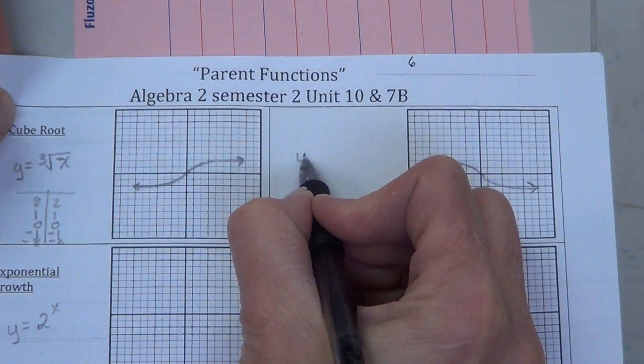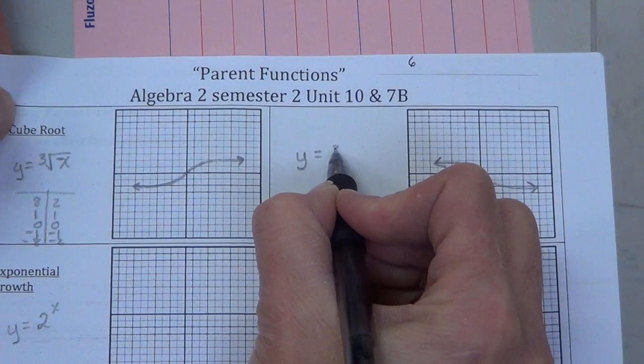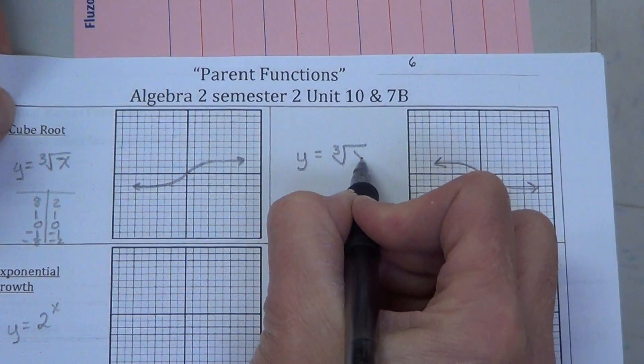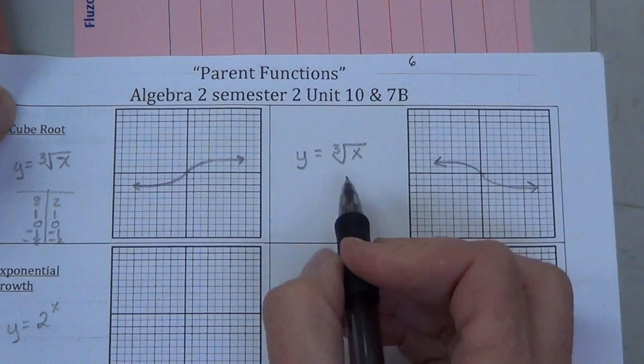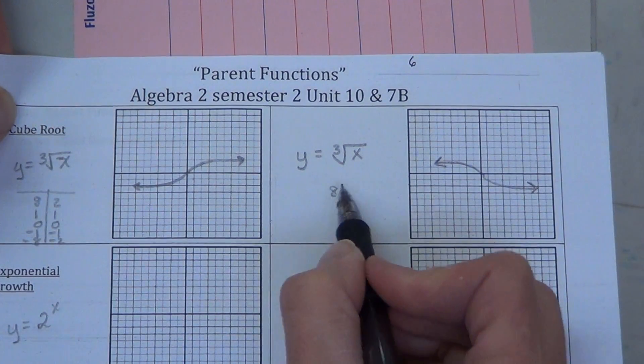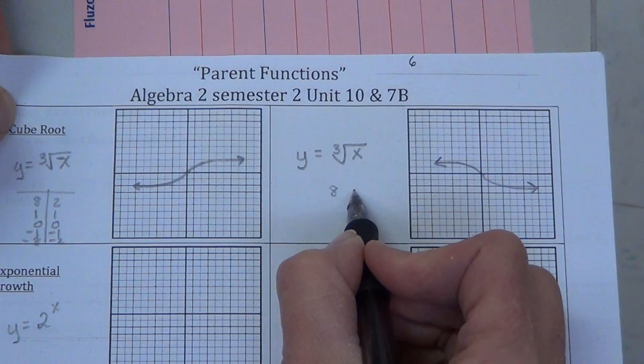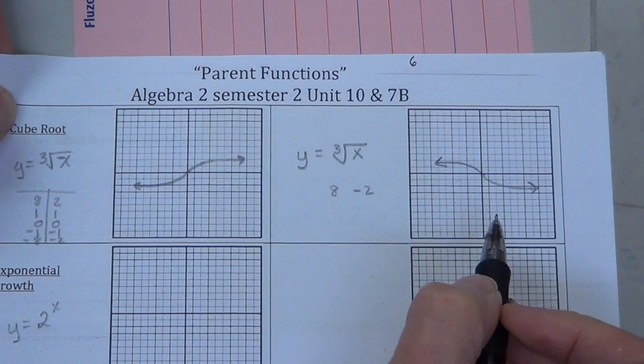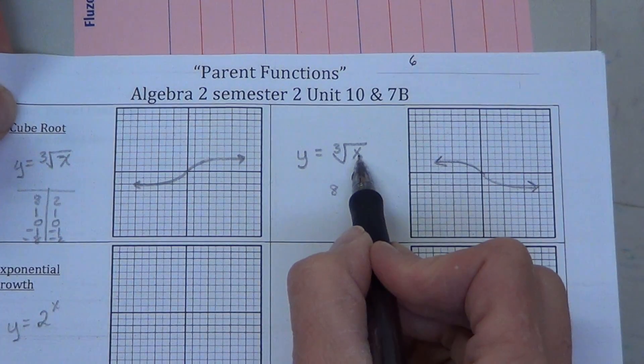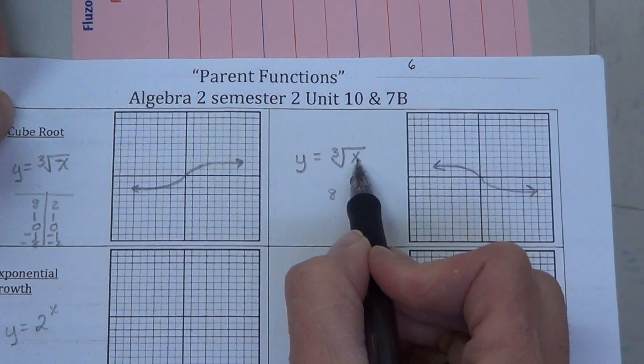But what would we do to our parent function to get the results there? We want to plug in 8 and get negative 2. Well, the cube root of 8 is 2. So again,